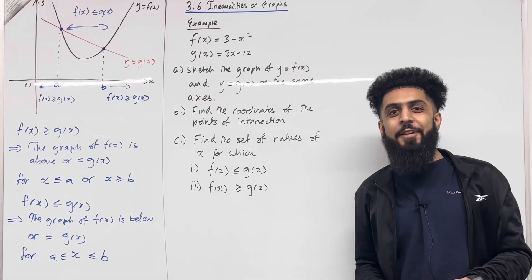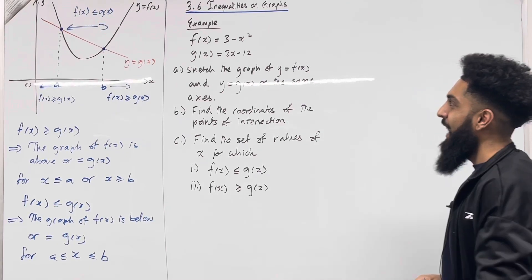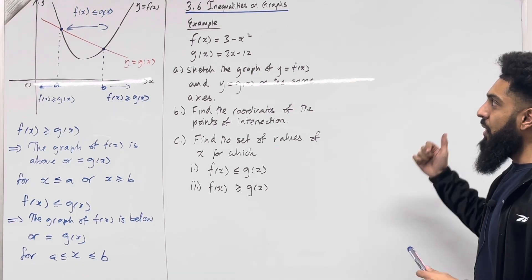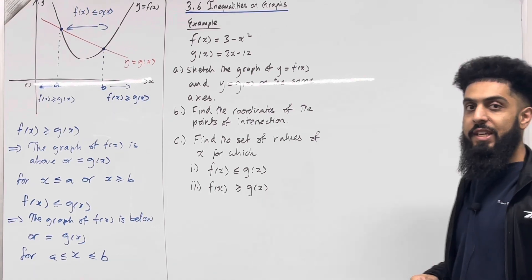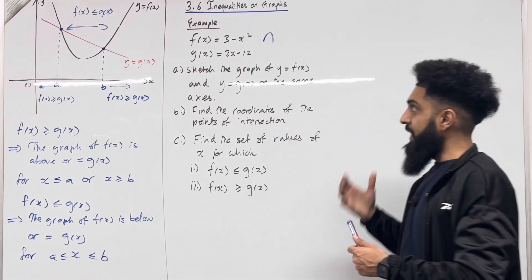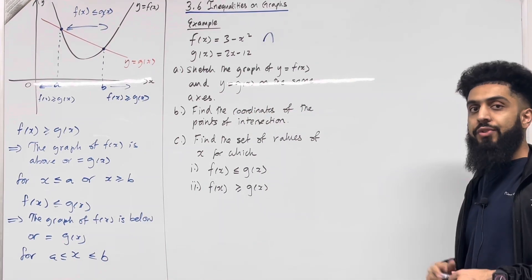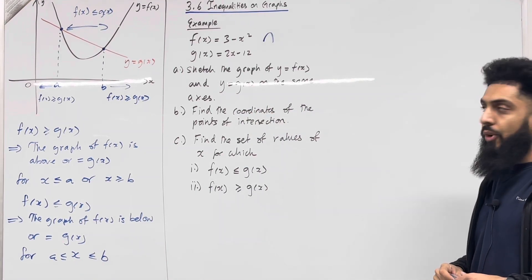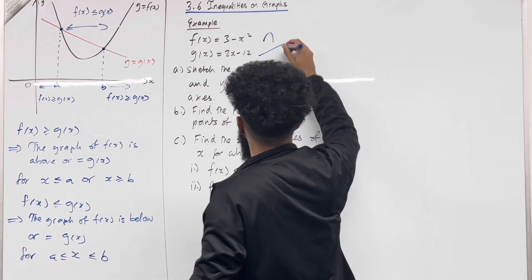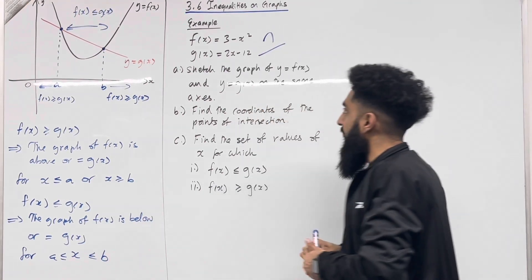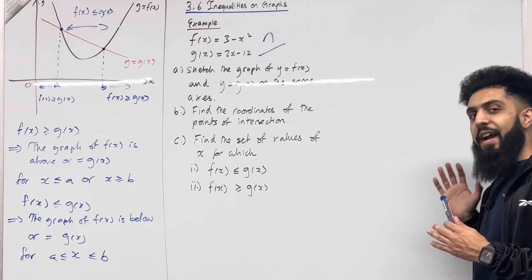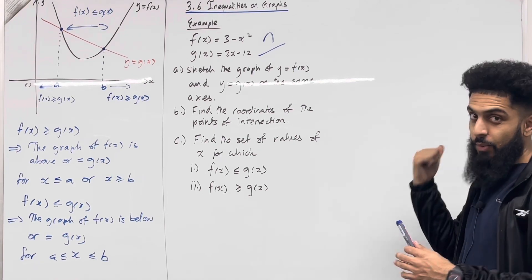Let's have a look at this particular example. f(x) = 3 - x², which is a negative quadratic because the coefficient of x² is negative 1, so it takes on this particular shape. g(x) = 2x - 12, which is a straight line with positive gradient because the coefficient of x is 2. Part A: sketch the graph of y = f(x) and y = g(x) on the same axes.